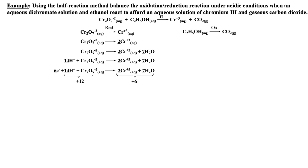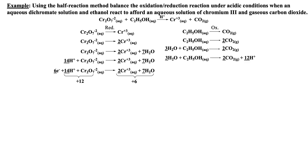Let's repeat these steps to the oxidation half-reaction. First, the element being oxidized, carbon, needs to be balanced. Now let's balance the oxygen atoms by adding the appropriate number of water molecules to the reactant side of the equation. Now we have to equate the number of hydrogens by adding the appropriate number of protons to the product side. At this point, we calculate what the overall charge is on both sides. The only way to make these charges balance is to add twelve electrons to the product side.